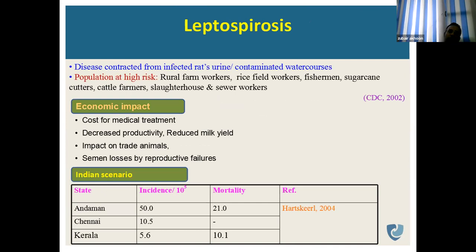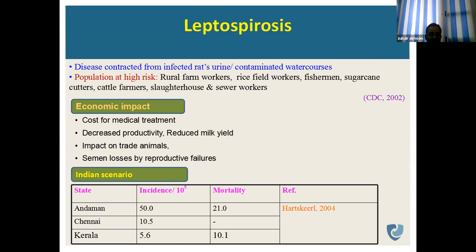Another important zoonotic disease of sheep and goats is leptospirosis. Diseases are contracted from infected rats' urine or contaminated water sources. Populations at high risk include rural farm workers, rice field workers, fishermen, sugarcane cutters, cattle farmers, slaughterhouse workers, and sewer workers, as per the CDC. Economic impact includes costs of medical treatment, decreased productivity and milk yield, impact on trade of animals, and reproductive failures. In India, Andaman and Nicobar records 50 cases per 100,000 with 21% mortality; Chennai has 10.5 cases; and Kerala 5.6 cases with 10.1% mortality.